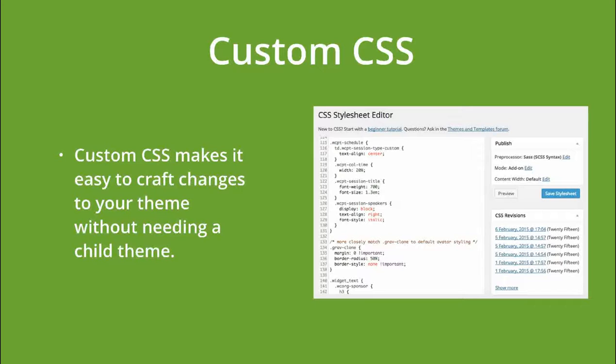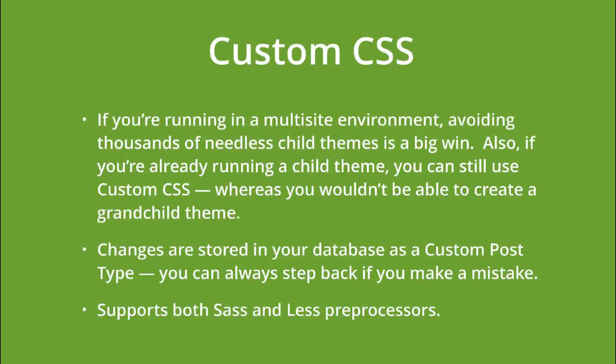The first module to talk about is Custom CSS. It's a really neat way to make simple color or layout changes to your site without needing to create a child theme. It's basically just an easy way to add simple changes right into your site, found under Appearance > Edit CSS. You can copy and paste a color code from your theme developer and click Save.